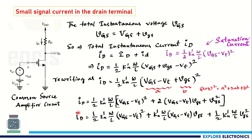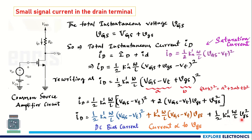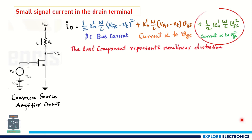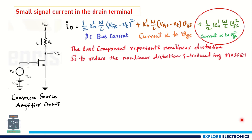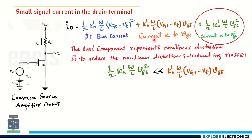There are three terms in the instantaneous current expression. The first term is the DC bias current — it contains only capital VGS. The second term is the small signal current, proportional to vgs. The third term contains vgs², which causes non-linear distortion. To reduce this non-linear distortion, we need to eliminate the third term by ensuring it is much smaller than the second term.